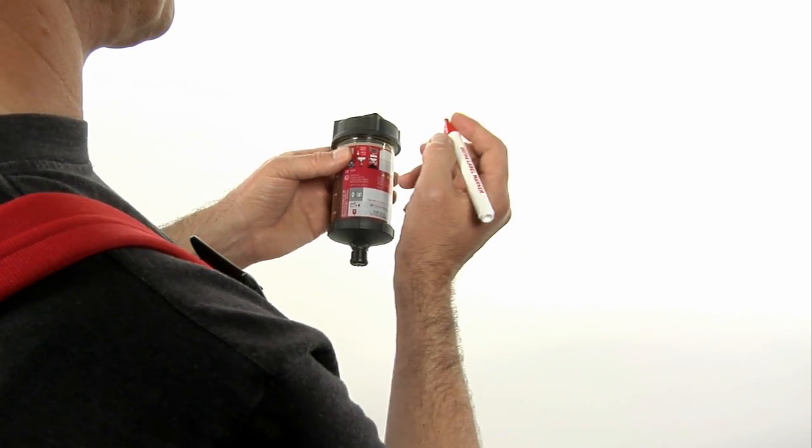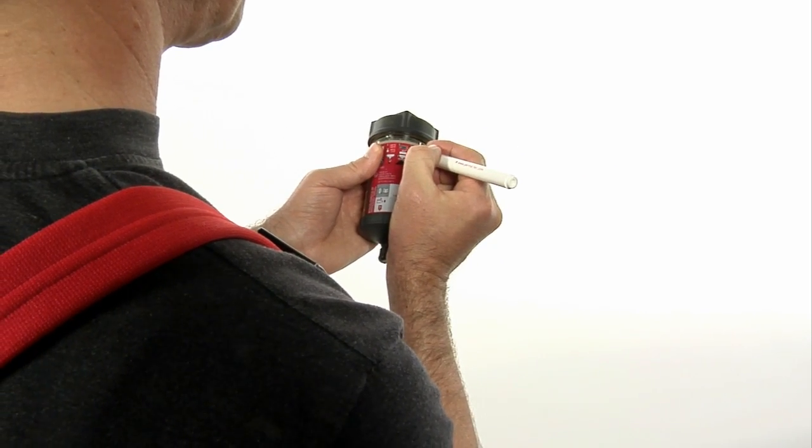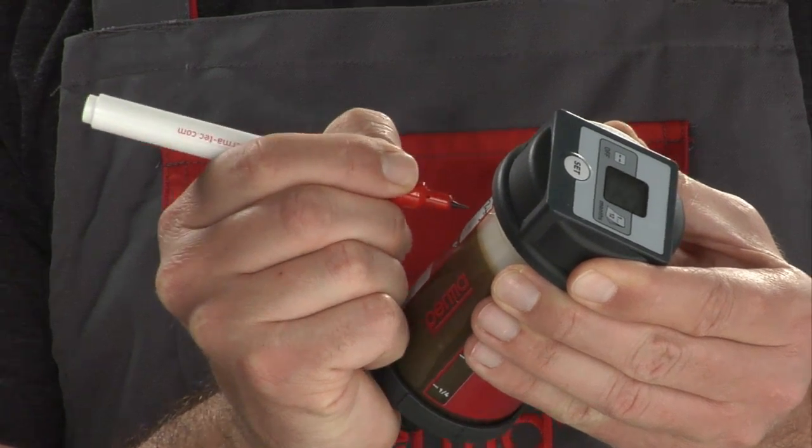Use a waterproof pen to write the activation and expected replacement date on the lubricator.